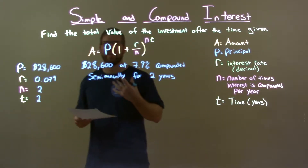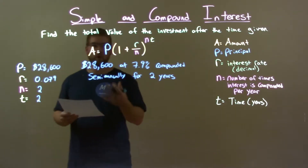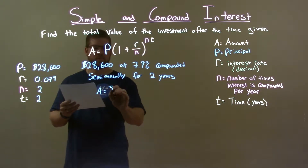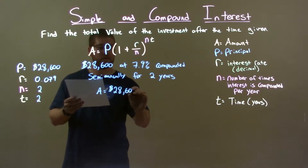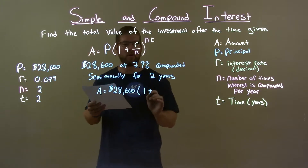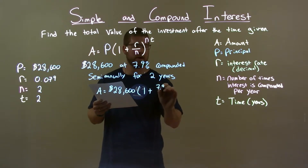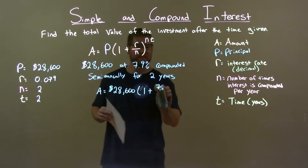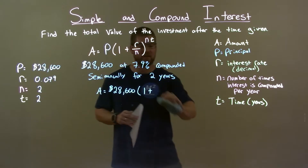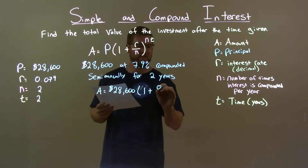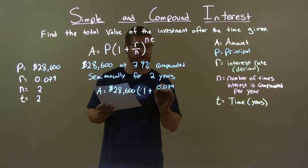So with that, we plug into our compound interest formula. A equals the principal, $28,600, multiplied by 1 plus R — the interest rate. Not 7.9 — it's written as a decimal. That's a common mistake I see students make all the time. Be careful, write it as a decimal: 0.079.